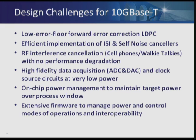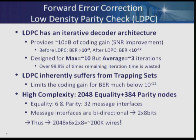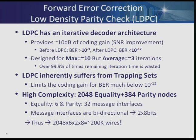LDPC provides about 10 dB of coding gain and gets us from a bit error rate of 10 to the minus 3 to better than 10 to the minus 12. Ideally, LDPC should be designed to handle 10 iterations — iterations being when messages are passed from the parity to the equality node in computing and correcting the errors. But generally, almost all the time, three iterations are more than sufficient. We leverage this fact to do the LDPC design.